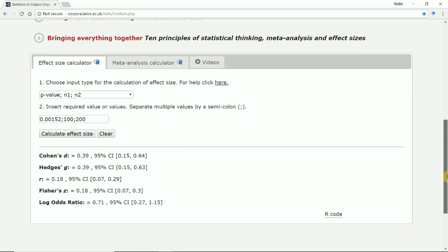We can see that we get a range of effect sizes from Cohen's D, Hedges' G, R, Fischer's Z, and log odds ratio. Not only do we get the effect size itself, but we also get a 95% confidence interval, that is, the interval of values or range of values where the effect size is very likely to lie in the whole population.